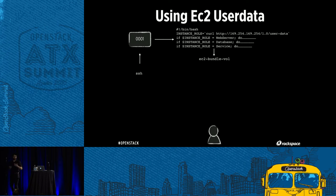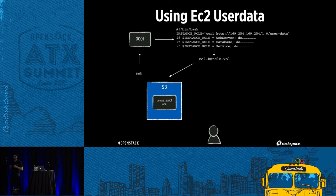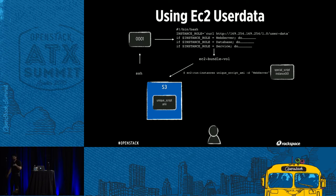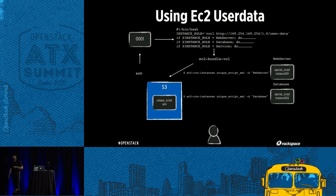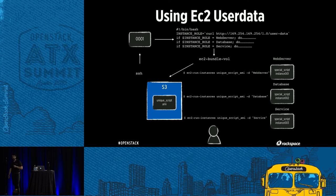If it's a database, install Postgres or MySQL. Take a snapshot with a bundle, put it into S3, then boot it with user data specifying 'web server' and it will install Apache and configure itself. This was a pretty neat way of taking advantage of user data at the time.